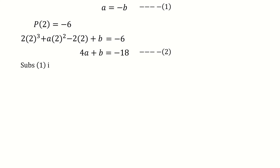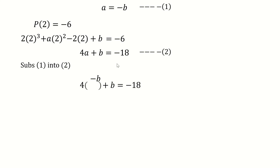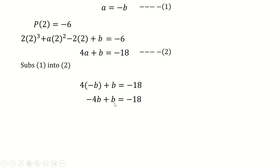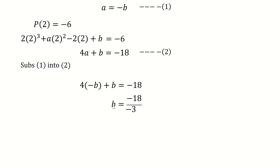Now we solve the two equations simultaneously. Substituting equation 1 (a = -b) into equation 2: -4b + b = -18, which simplifies to -3b = -18, so b = 6. We now have the value of b.